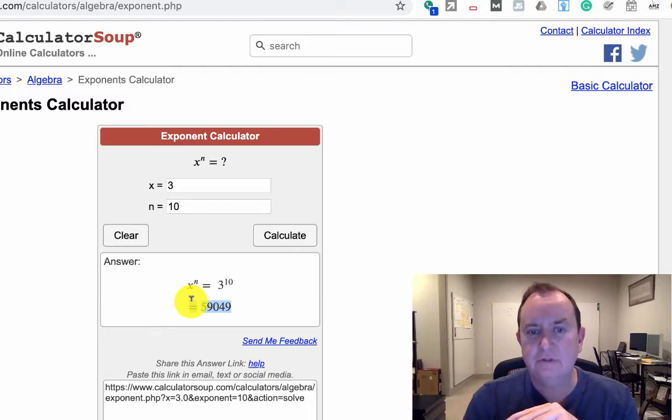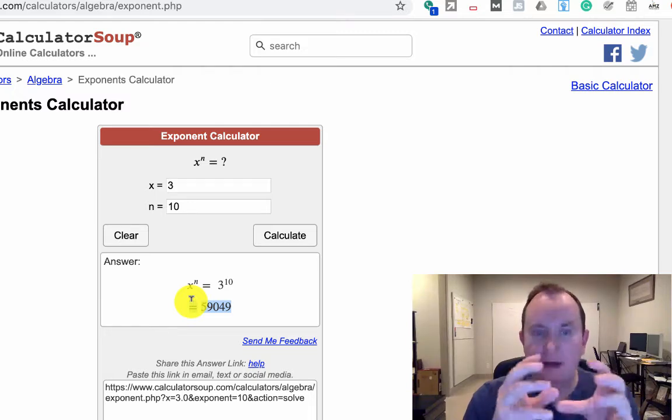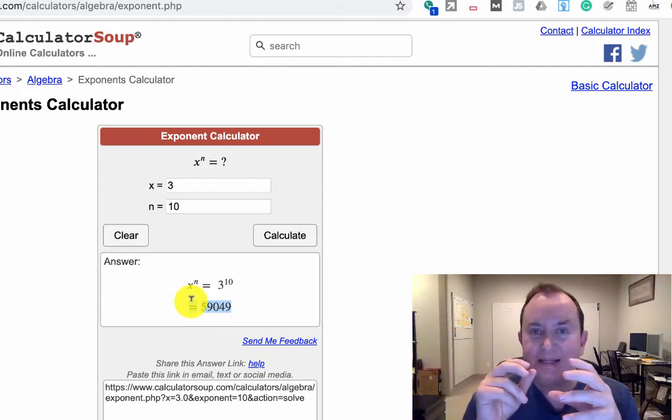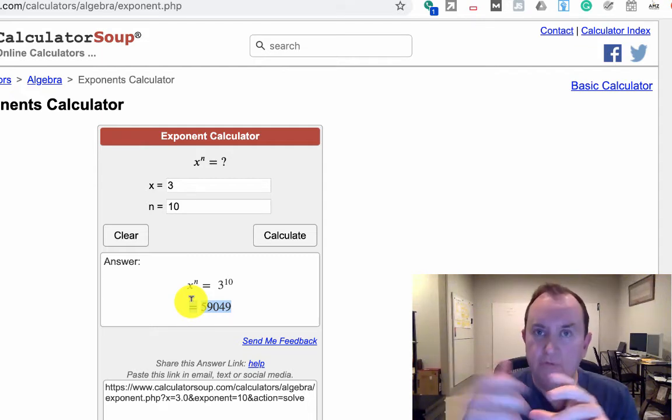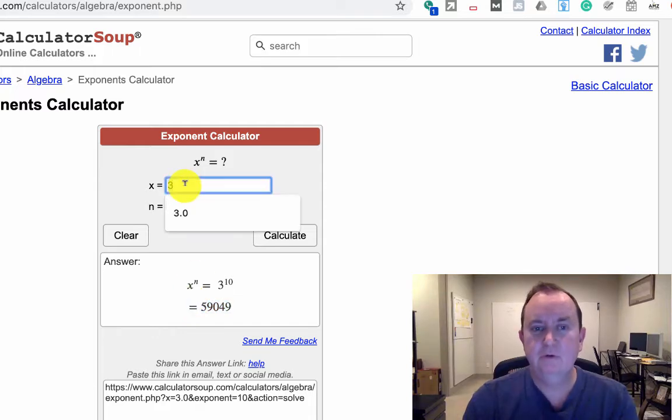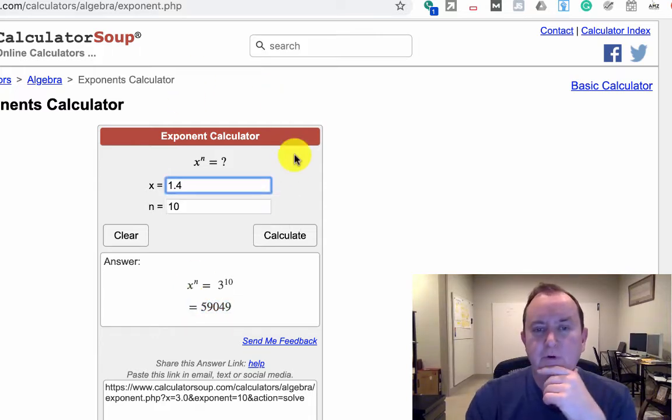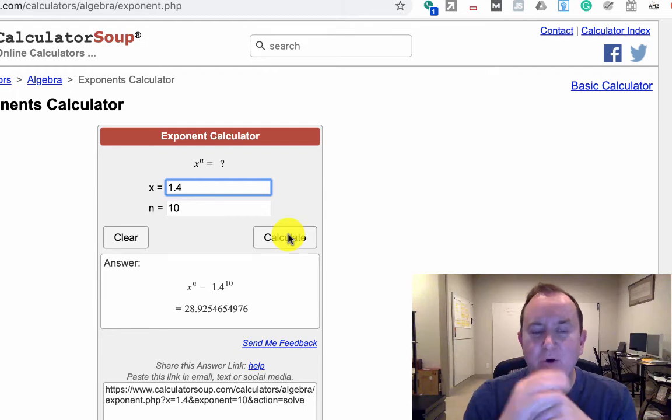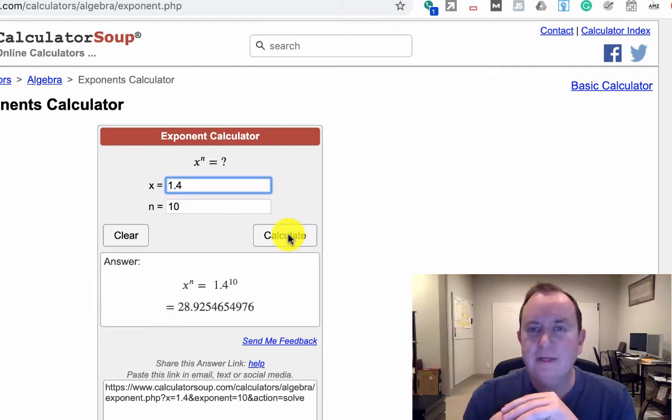This is why masks are important. The R-naught value of 3 means 3 to the power of 10. 59,000 people could be infected, whereas the common flu with the R-naught value of 1.4, that same 10 hops, only has a potential to infect 29 people.